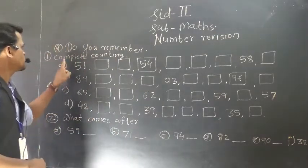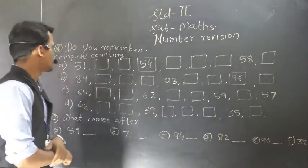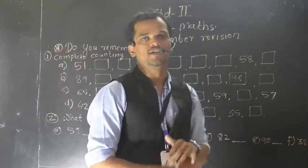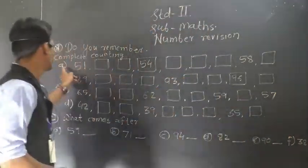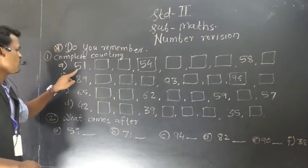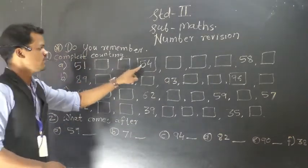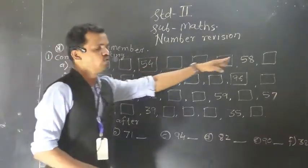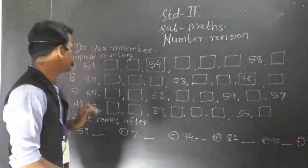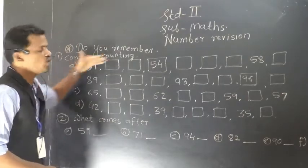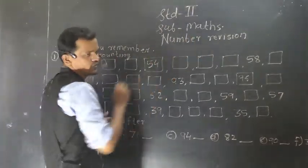So first question: complete the counting. So we have to complete this counting. First numbers are here: 51, then 2 blank places are here, then 54. We have to complete this number series. So we can see this is the forward counting, because the numbers are growing every time.